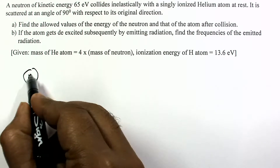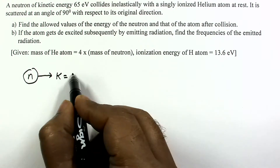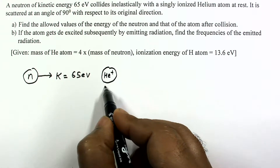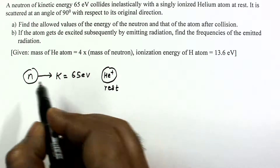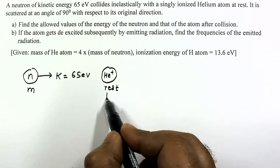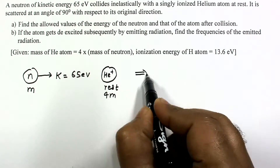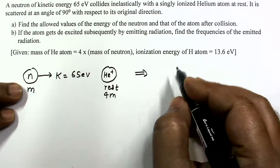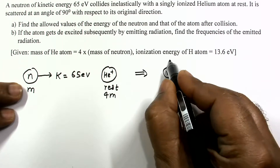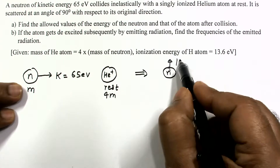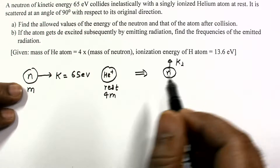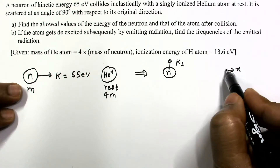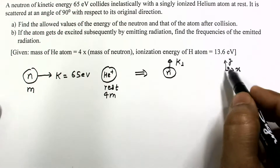The neutron is coming with kinetic energy equal to 65 electron volt and it collides with the single ionized helium plus, which is initially at rest. Suppose mass of neutron is m, so mass of helium plus will be 4m. After the collision, the neutron goes at an angle of 90 degrees with respect to its original direction. Taking the x-axis along the initial direction and y-axis perpendicular, momentum should be conserved in both perpendicular directions.